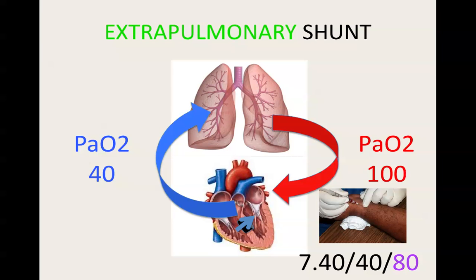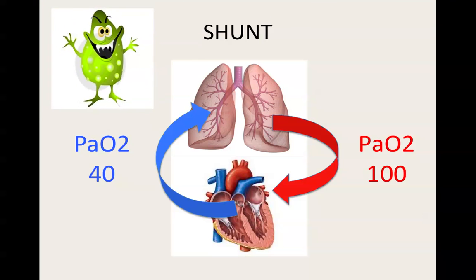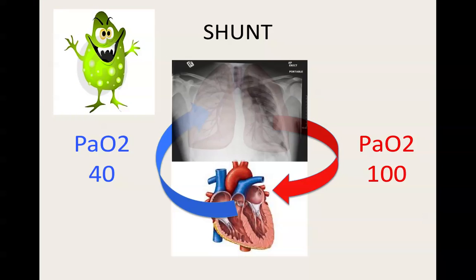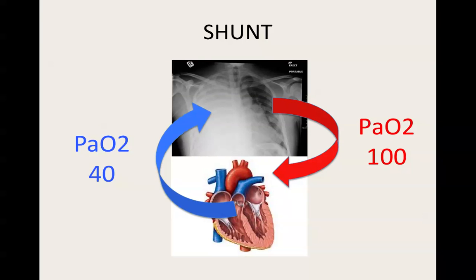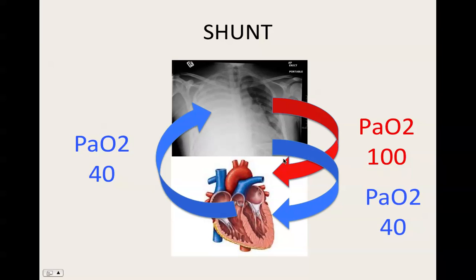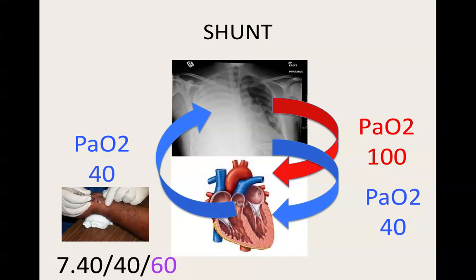Let's take another example. What would happen if I were to fill up an entire lung with something like a pneumonia? Now you have a whole lung that is being perfused but is not being ventilated, meaning oxygen can't get through all of that pus into the blood. So while oxygenated blood will still come from the left lung, as you can see here, now we have deoxygenated blood coming from the right lung, leading to an intrapulmonary shunt.